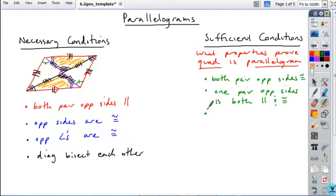Anybody else? What other ones did you guys find? What about opposite angles? Okay, so you have both pairs of opposite angles congruent. Okay, anything else?